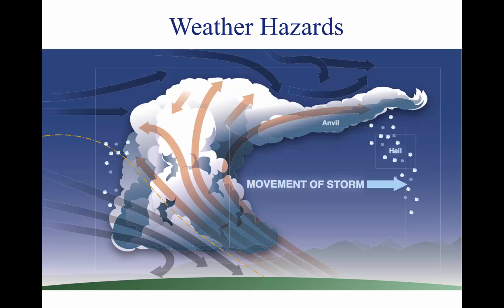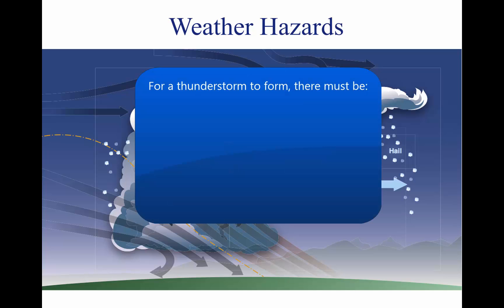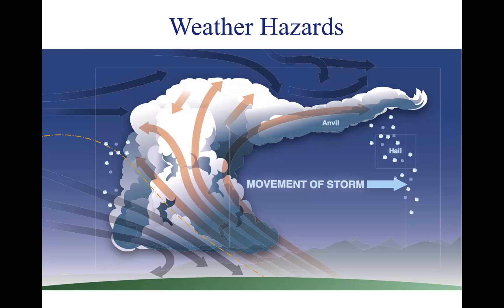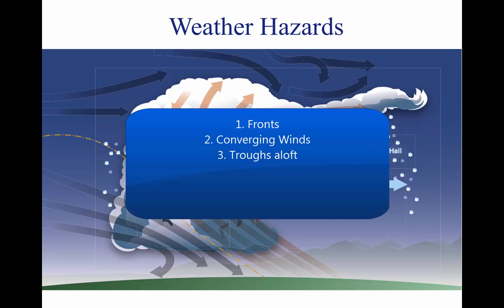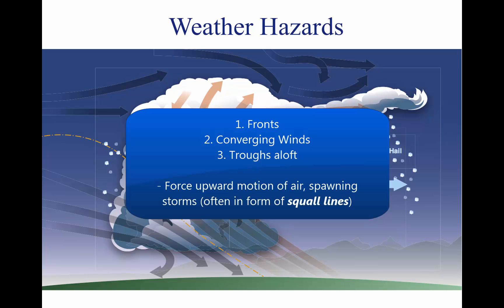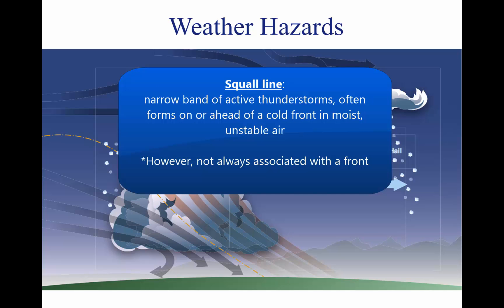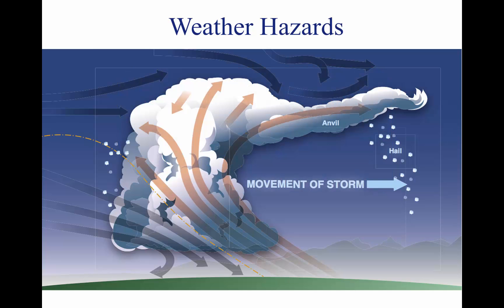These hazards occur individually or in combinations, and most can be found in a squall line. For a thunderstorm to form, the air must have sufficient water vapor, an unstable lapse rate, and an initial lifting action to start the storm process. Fronts, converging winds, and troughs aloft force upward motion, spawning these storms, which often form into squall lines. A squall line is a narrow band of active thunderstorms that often develops on or ahead of a cold front in moist, unstable air, but may develop in unstable air far removed from any front. It often contains steady-state thunderstorms and presents the single most intense weather hazard to aircraft. It usually forms rapidly, generally reaching maximum intensity during the late afternoon and the first few hours of darkness.